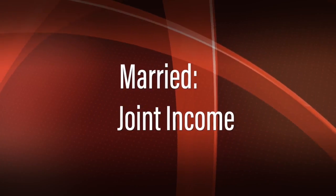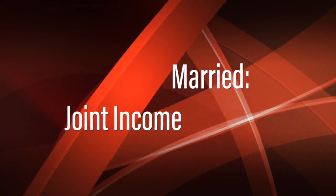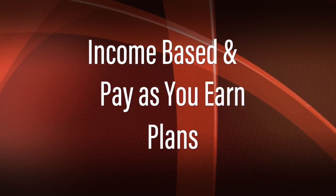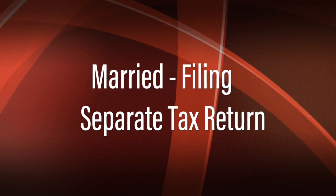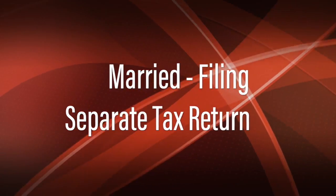You should consider how income is calculated and how payments are set. Income is calculated for married people based on joint income under the revised pay-as-you-earn plan in every case. Under the other plans — income-based repayment and pay-as-you-earn — married people have the option of separating their income from their spouse's by filing a separate tax return. So if you want to make a payment based on your income alone and you're married, the revised pay-as-you-earn plan is not the best choice for you.